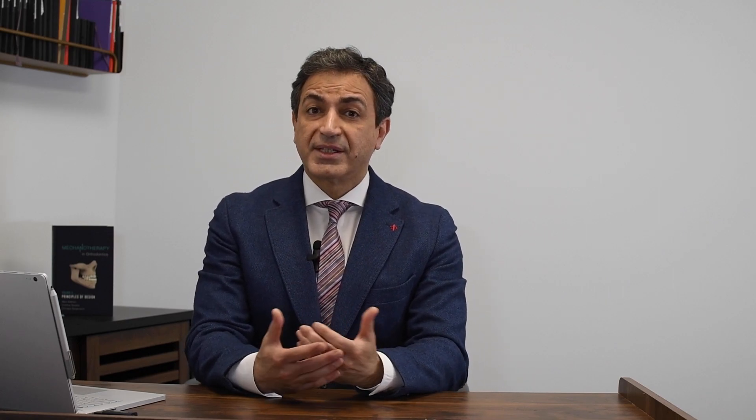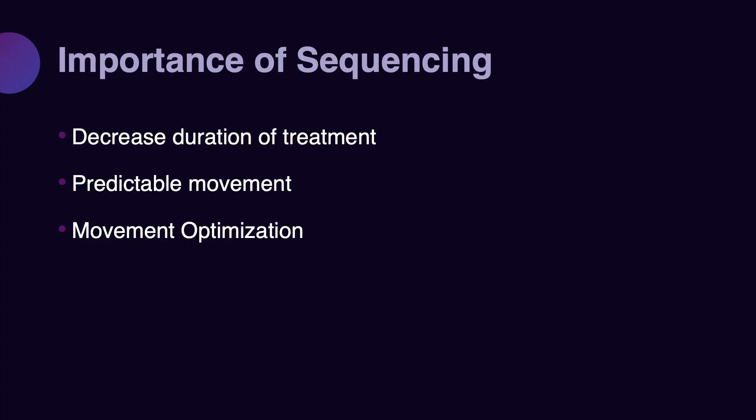Second, sequencing makes the movement predictable. If your mechanics are not precise and not customized, you may want to move the tooth or orthopedic target in a certain direction and end up someplace else. The third factor is movement optimization. Biology controls the rate of movement, but what happens if your mechanics actually decrease the rate of tooth movement?